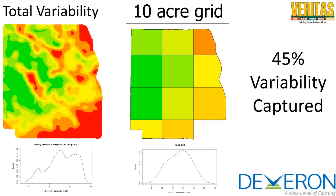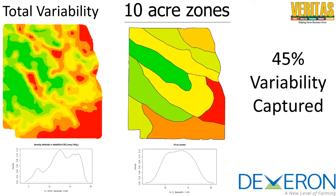So what else can we do? We could go to a 10-acre grid approach, and you can see we're capturing a little bit more of the variability — up to 45%. Maybe you say you want to use a 10-acre zone instead. In this case, you can see the grids are a lot different than the zones, but in both cases you're capturing 45% of the variability. It's a different 45%, but in both cases you're at 45%.